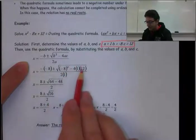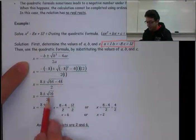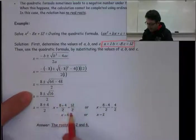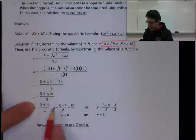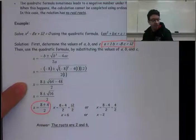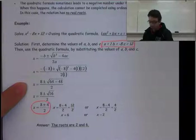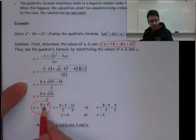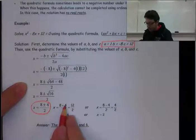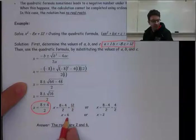Now we simplify what's under the square root, which gives us 16. Square root of 16 is 4. There are two possible ways to solve this, plus or minus. If we do plus, we get 8 + 4 over 2, which is 12 ÷ 2, or x = 6.